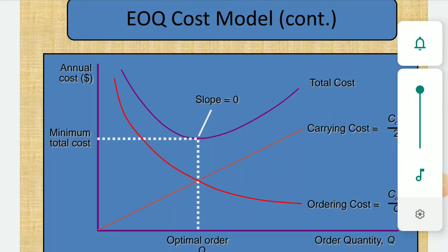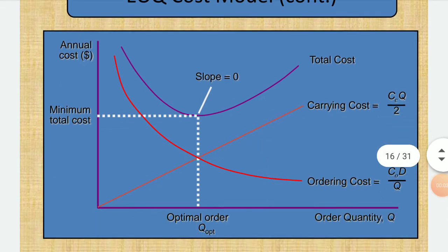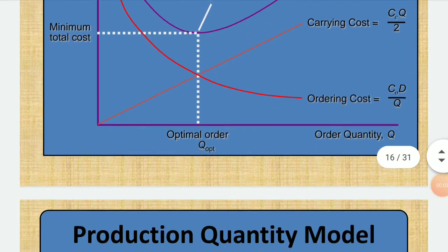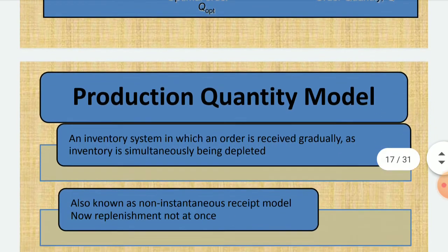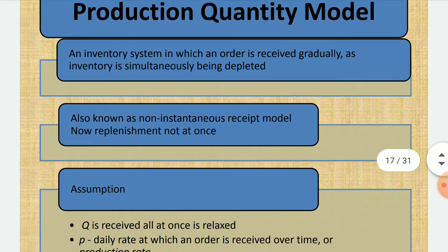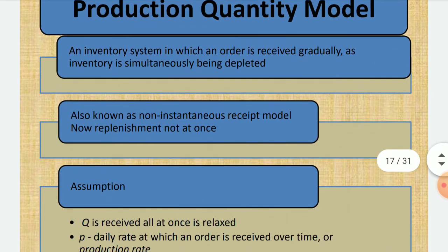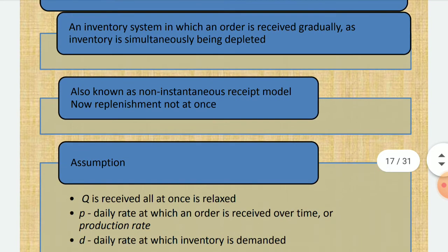Hello friends. After studying the EOQ Cosmo model, today we will go for the production quantity model. An inventory system in which an order is received gradually as inventory is simultaneously being depleted.